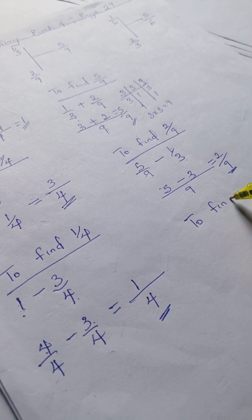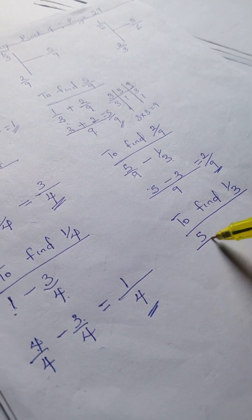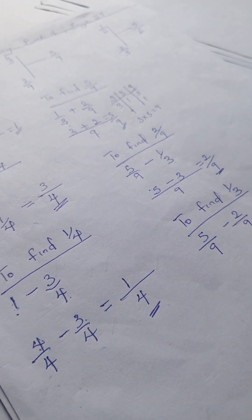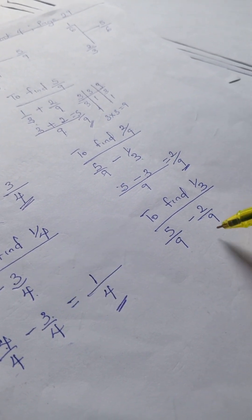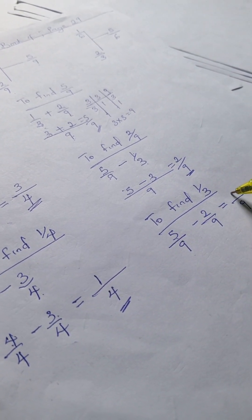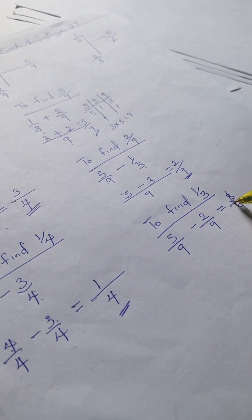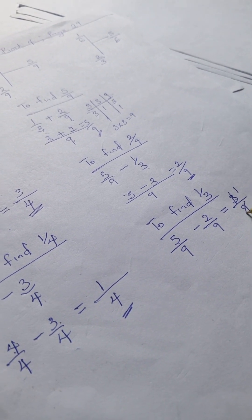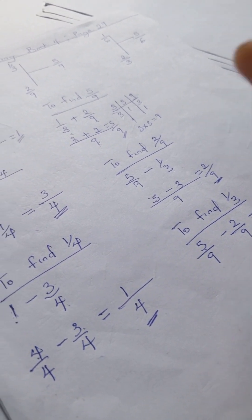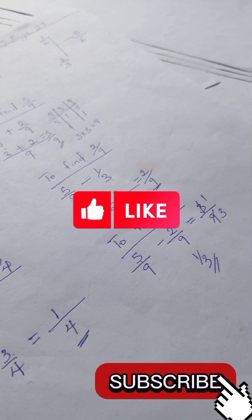To find 1/3, we have 5/9 minus 2/9. Here we have like denominators, so we simply pick one. Five minus 2 is 3. Now 3/9 can be reduced to the lowest term: 3 divided by 3 is 1, and 9 divided by 3 is 3, so we have 1/3.